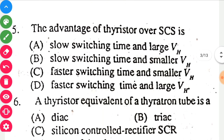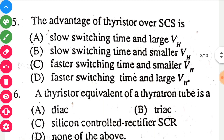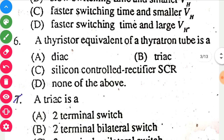The next question: the advantage of thyristor over SCS is — thyristors are only used for high power switching purpose and not for control switching or amplification. So the answer is C, because thyristor has faster switching time and smaller VH.